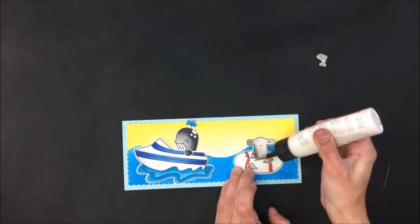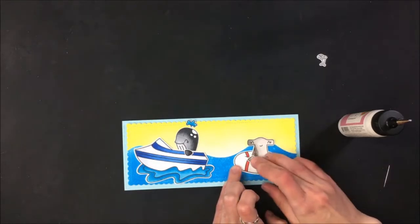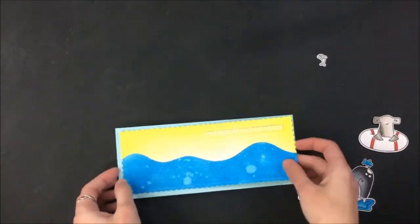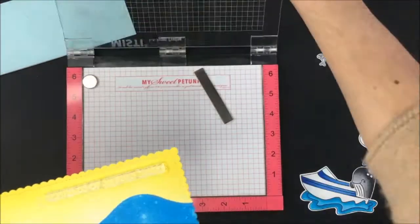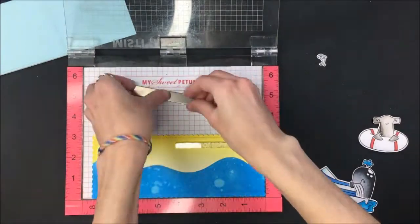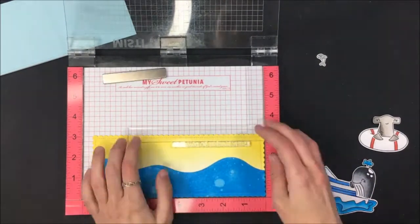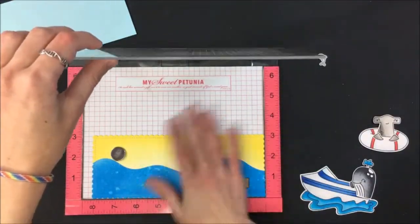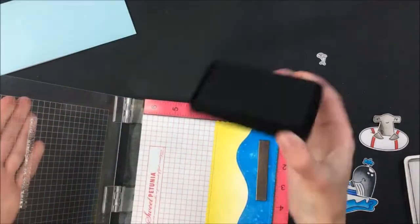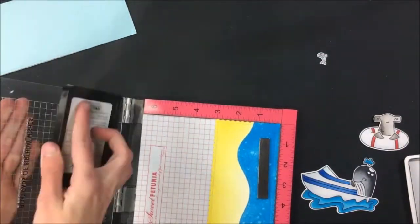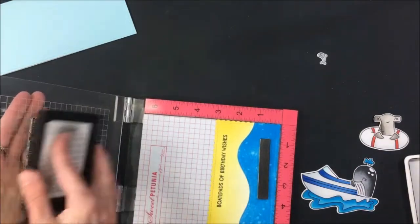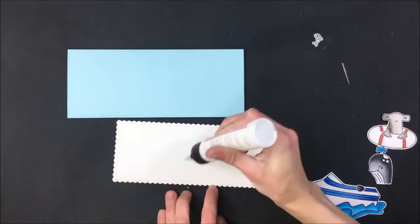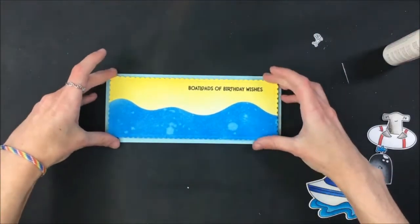Once I'm happy with how things are arranged I'm just coming in and gluing down my shark's fins to that little inner tube. Then I realized that I hadn't thought about where I was going to put my sentiment. I lined up the sentiment where I thought it wouldn't interfere with any of the stamped images and then I transferred this over to my Misti. I used one of my creative corners because after all this ink blending and gluing I really don't want to mess this up. I stamped it down a couple times because I was stamping over distress oxide ink.